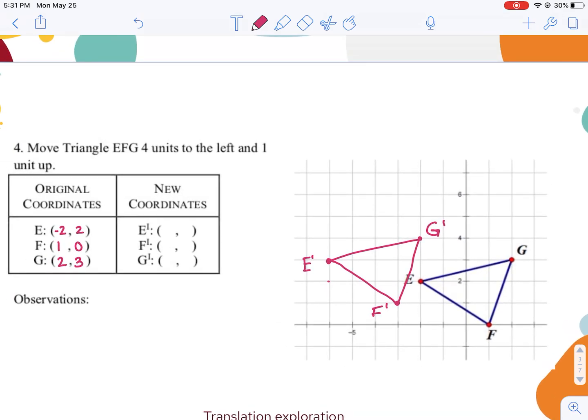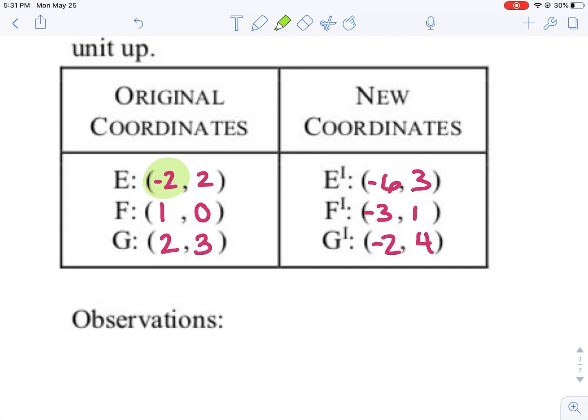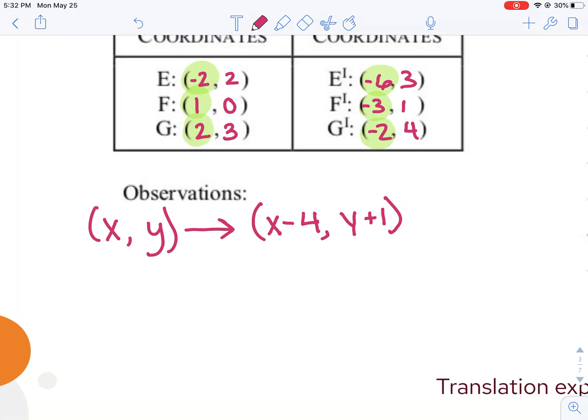Now I'm going to look at where those points landed and see if I can figure out a rule that I can use rather than doing it by hand each time. So E ended up at negative 6, positive 3. F prime ended up at negative 3, positive 1. And G prime ended up at negative 2, positive 4. When I look just at this ordered pair, I can see that to get from this X value to that, I had to subtract 4. Same thing with my other two X values. So I could write my rule as XY becomes X minus 4. With my Y values, 2 to 3 I added 1, 0 to 1 I added 1, 3 to 4 I added 1. So my rule becomes Y plus 1.